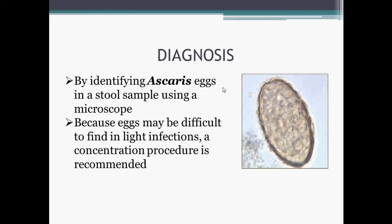Diagnosis is by identifying Ascaris eggs in a stool sample using a microscope. This is a straightforward method requiring normal saline, a wooden stick, a microscope, and a fecal specimen. Because eggs may sometimes be difficult to find in light infections, a concentration procedure is normally recommended.